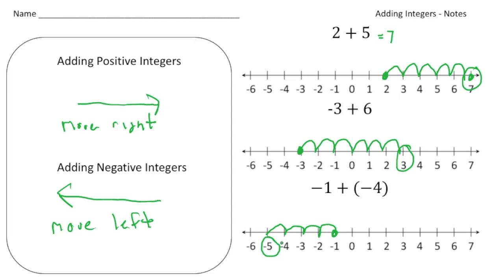So the big idea of this is when you add positive integers, you move to the right. And then when you add negative integers, you move to the left. So what I want you to do is I want you to pause the video and try the your turn now problems. And when you're done, hit play. You can see how you did.